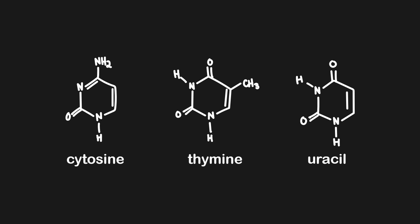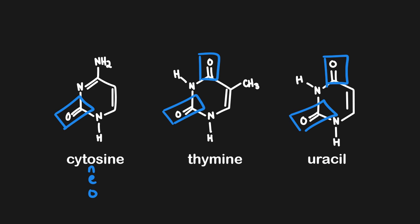Let's get started with cytosine. Cytosine has '1O' in the name, and that's how I like to think about the structure. These are all pyrimidines with one ring, but cytosine is the only one that has one oxygen. This is different than both uracil and thymine, which have two carbonyl groups attached. So if you only see one oxygen, remember that's the '1O' in cytosine.